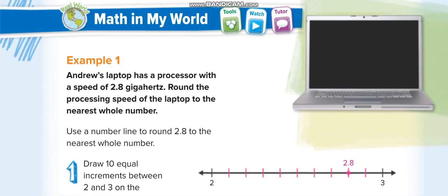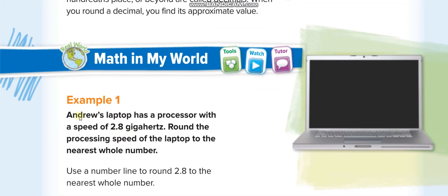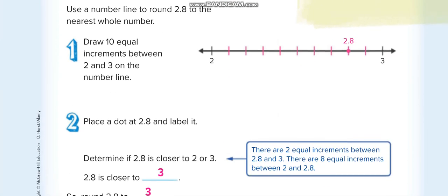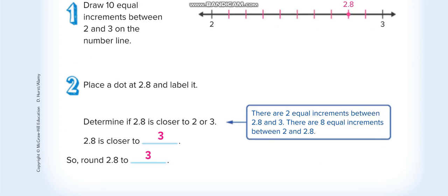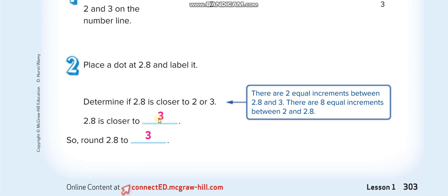The first example: Andrew's laptop has a processor with a speed of 2.8 gigahertz. Round the processing speed to the nearest whole number. When they say whole number, you round to the ones place. You can see that 2.8 is close to 2 or 3 — of course it's close to 3, so when you round 2.8, the answer is 3.